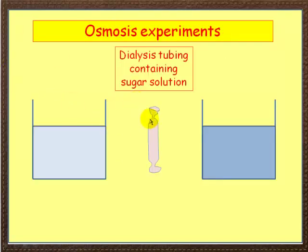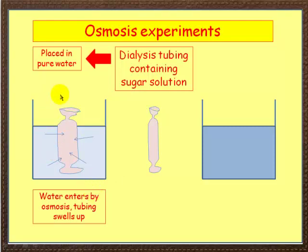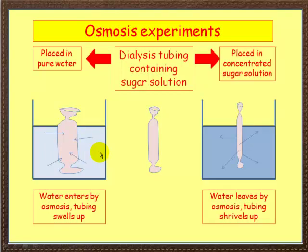Let's look at this in an experimental situation. Here we've got what's called dialysis tubing — sometimes it's called visking tubing. In the visking tubing, we've put some sugar solution and tied off both ends. We've got two beakers. On the left side we've got pure water. If you place a visking tubing into pure water, water moves from outside where there's much more water to inside where there's less water through the partially permeable membrane, so water enters by osmosis and the tubing swells up. Now if you put it into a very concentrated sugar solution, there's more water inside the tubing than outside, so water moves from inside to outside and the tubing shrivels up. That's osmosis in practice.